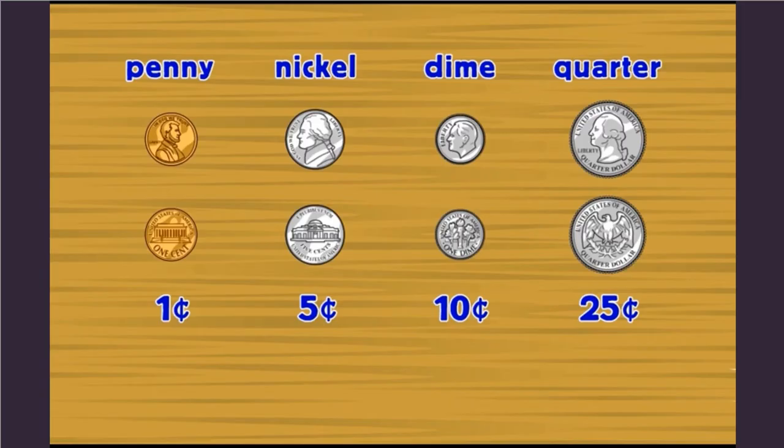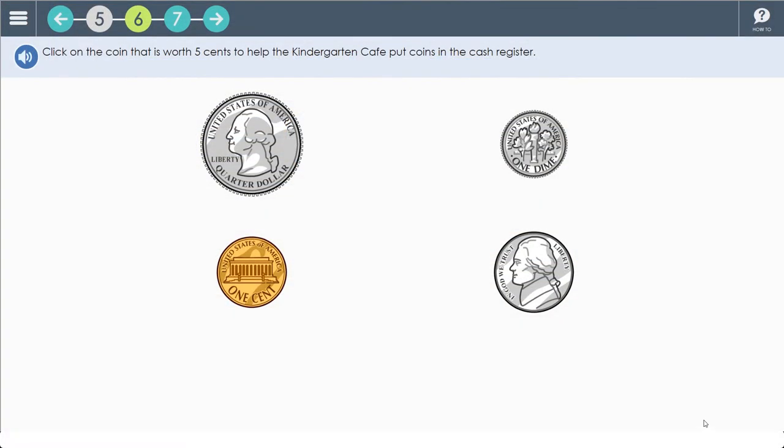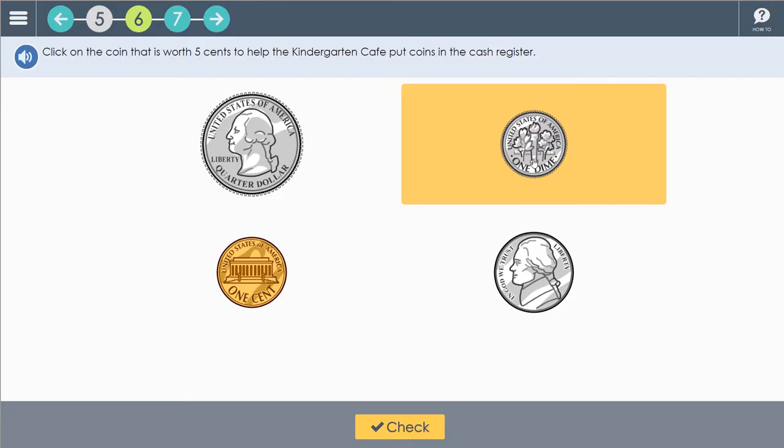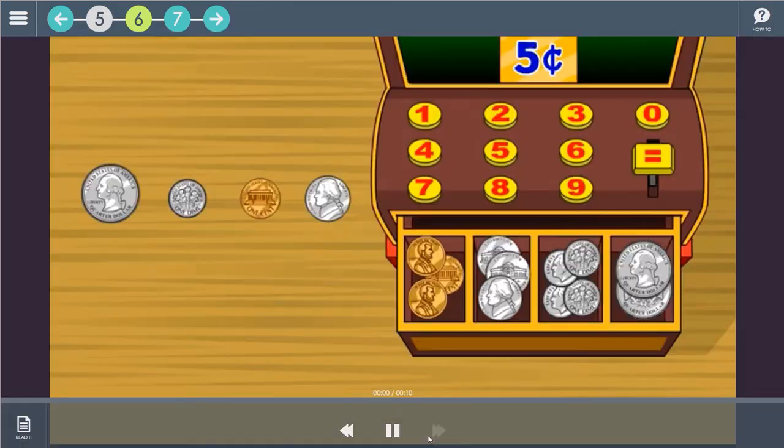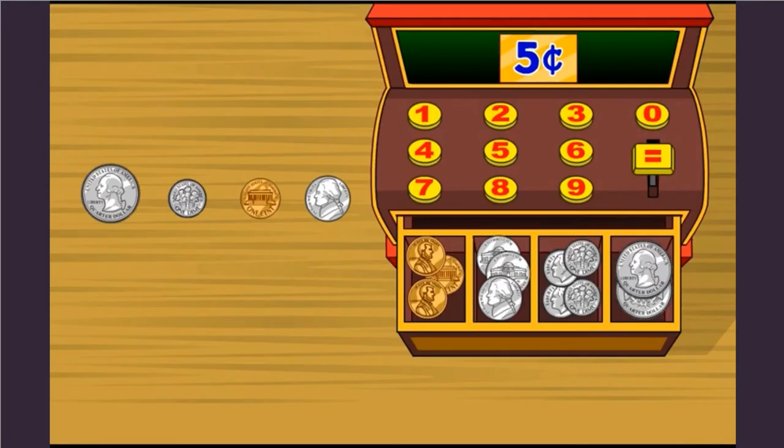Let's move forward. Click on the coin that is worth five cents to help the kindergarten cafe put coins in the cash register. My son and I both appreciate how Time for Learning makes sure that there is an understanding of the wrong answer in an encouraging manner. Let's look at the correct answer together. A nickel is worth five cents.